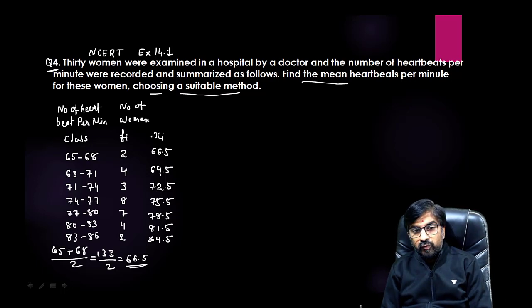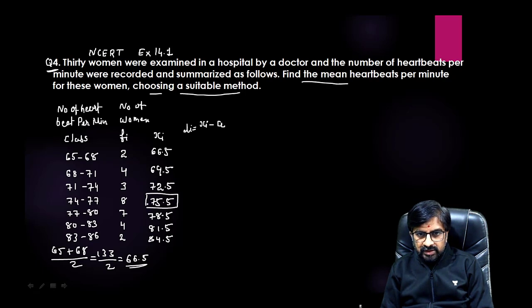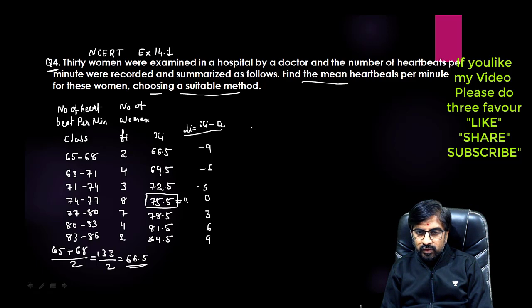Now look here, the numbers are big and if you use direct method fi into xi, your calculation will be very lengthy. So here we are going to make it small by using a short method, that is assumed mean method by finding di. How you can find di? di by subtracting xi minus a, where a is assumed mean. Here you can see seven terms are there. Generally we select middle term as your a. Here a is 75.5. Now subtract: 66.5 minus 75.5 gives -9, then -6, -3, 0, 3, 6, and 9. This method is called assumed mean method.